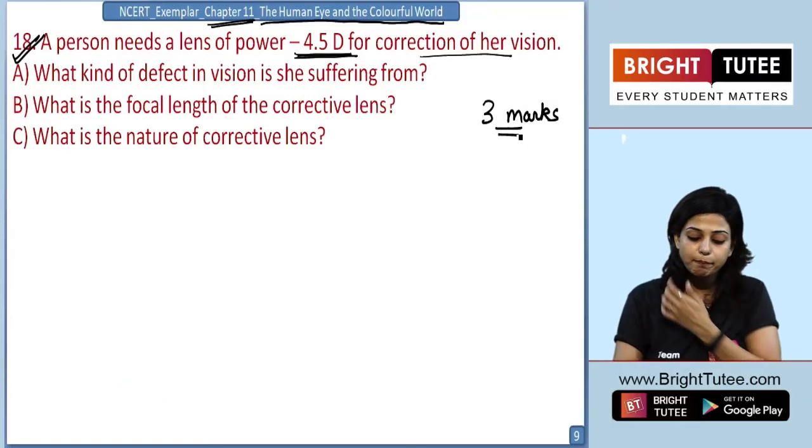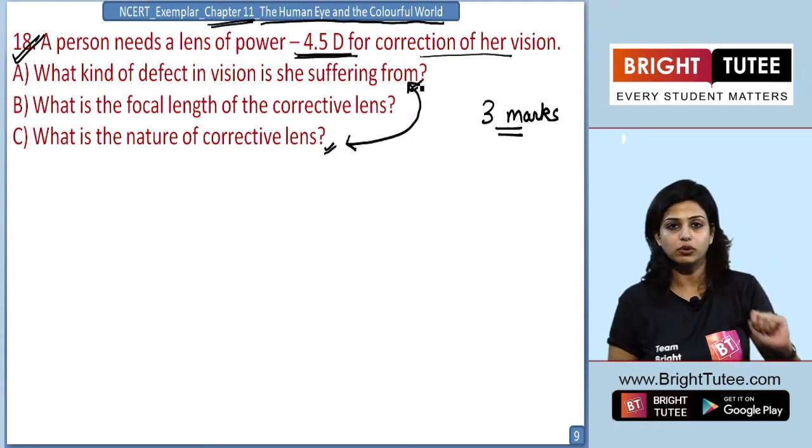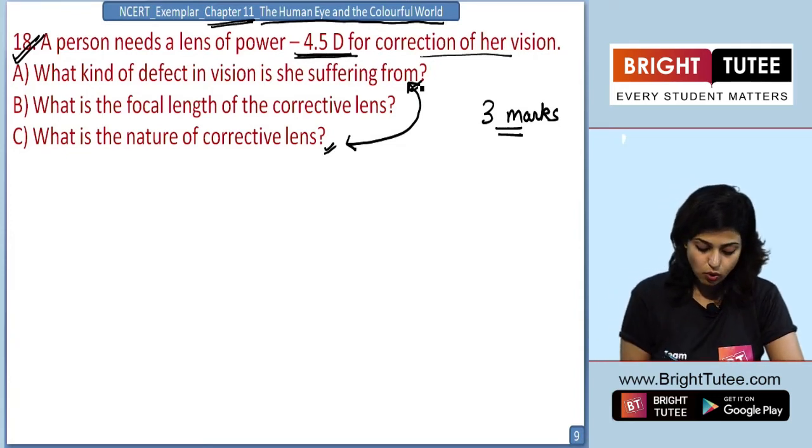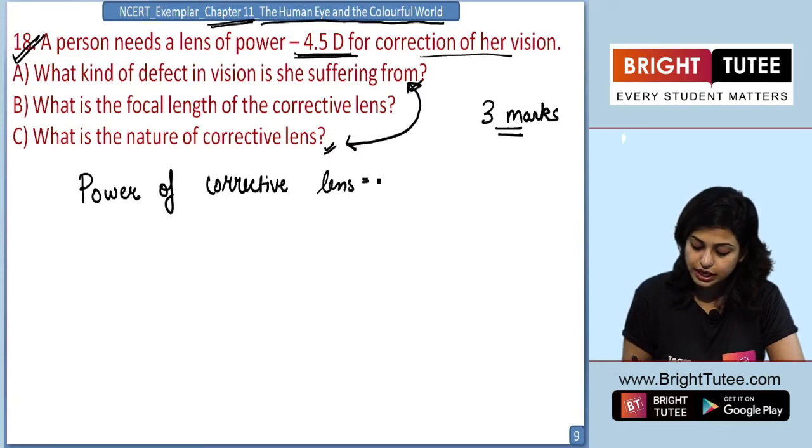Now we can connect part A and part C together and answer them in one go. We know that the person is suffering with some problem and the power of the corrective lens is minus 4.5 diopters.